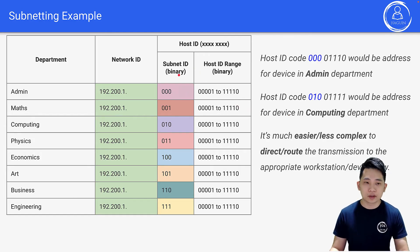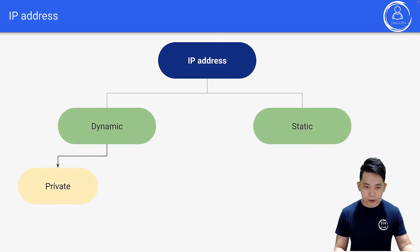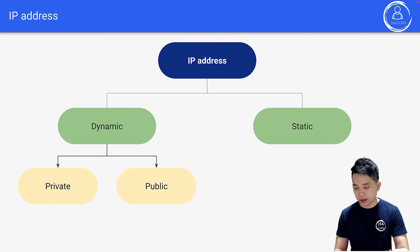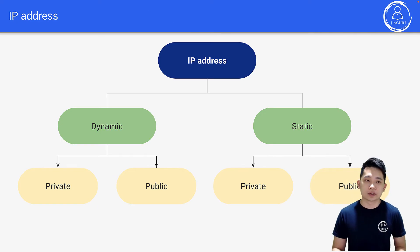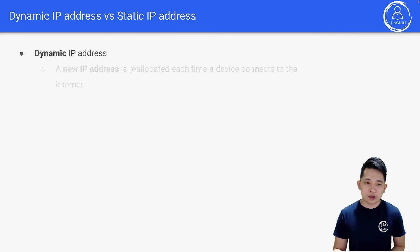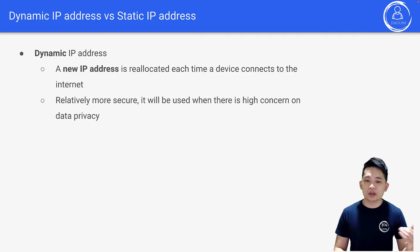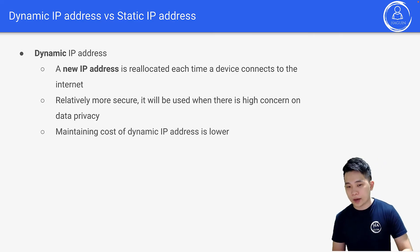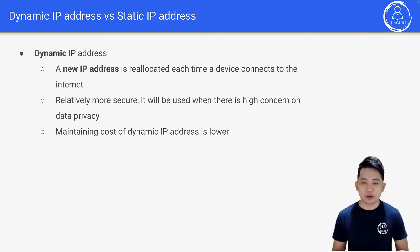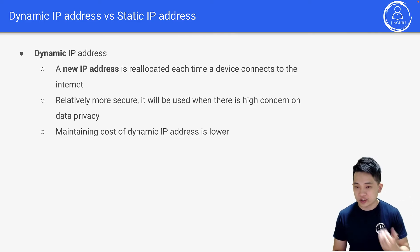IP addresses are also split into dynamic and static, and within those into private and public. For dynamic IP addresses, a new IP is reallocated each time a device connects to the internet. It's relatively more secure and has lower handling cost. For example, when you connect your phone to Wi-Fi you might get IP address A, disconnect, then reconnect and get IP address B, because A was taken by another device.